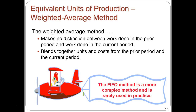For equivalent units production under the weighted average method: the weighted average method makes no distinction between work done in the prior period and work done in the current period — it blends together units and costs from both periods. There's also a FIFO method, which is more intuitive and more exact, but it requires more estimates and calculations. Therefore, in practice, most people use the weighted average method because it's more simplified.